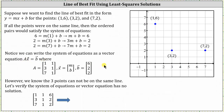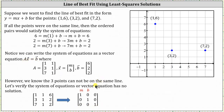Of course, we know all three points cannot be on the same line, so the equation Ax equals b has no solution. Let's verify this by writing the augmented matrix with rows 1 1 6, 3 1 2, and 7 1 2. Writing this in reduced row echelon form, the third row gives a contradiction — 0 equals 1 — confirming the system has no solution, as expected since no single line contains all three points.